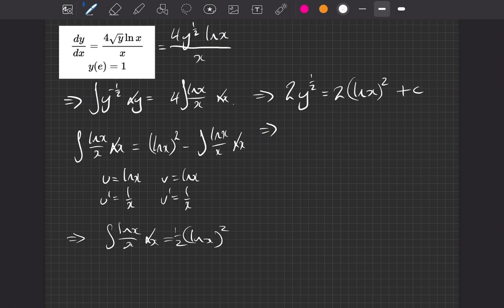So if we do that, our y is 1. So the left hand side is just 2. The right hand side then, we're going to have 2 multiplied by the log of e all squared plus c. And now the log of e is equal to 1. So what we're left with is 2 is equal to 2 plus c. So therefore, c is equal to 0.